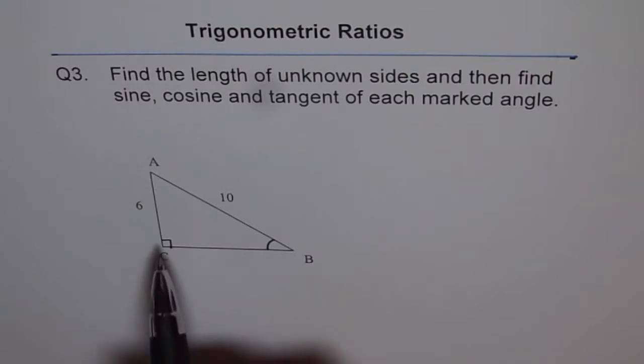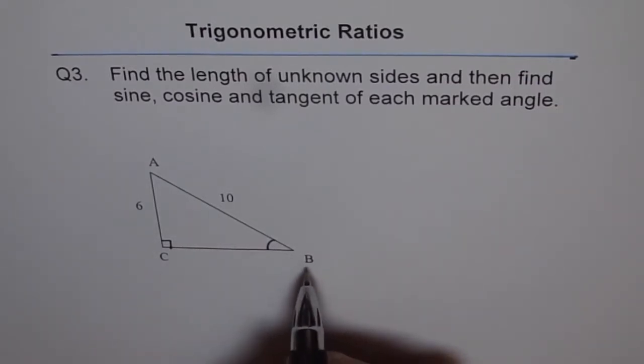The right triangle has two sides given to us: hypotenuse of 10 and one leg of 6 units. To find the other side, we can use the Pythagorean theorem.